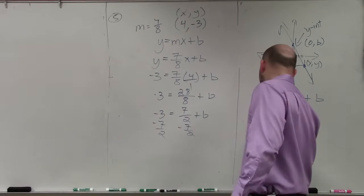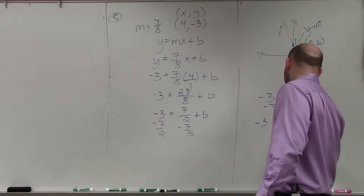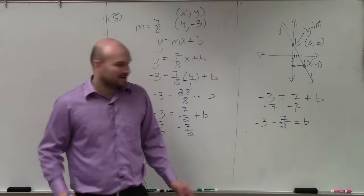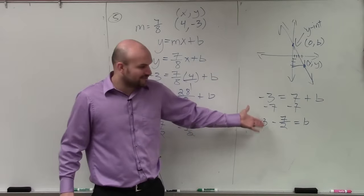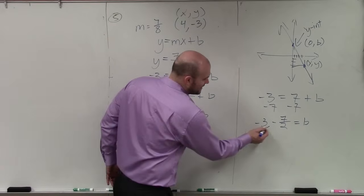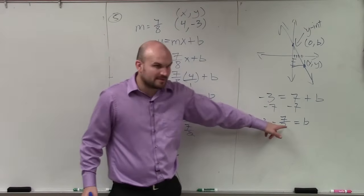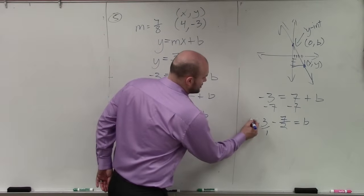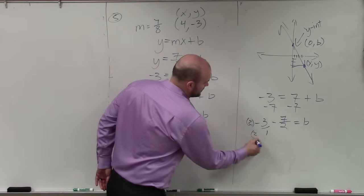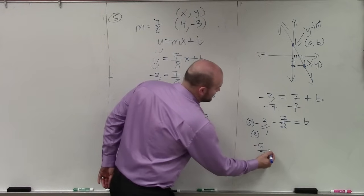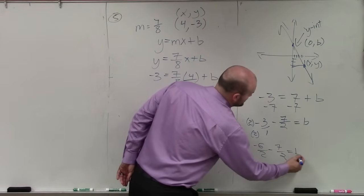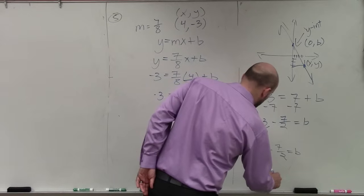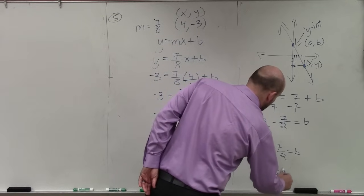So you subtract 7 halves on both sides. So now I have negative 3 minus 7 halves. And I know why you don't want to know what to do, because you do not want to be subtracting fractions. But basically, when subtracting fractions, all you have to do is make sure that both fractions have common denominators. So I write that over 1, and you can see that the common denominator between negative 3 over 1 and negative 7 over 2 is going to be 2. So you multiply by 2 over 2, and I get negative 6 halves minus 7 halves equals b. Now negative 6 minus 7, Thomas, is going to be negative 13 divided by 2 equals b.